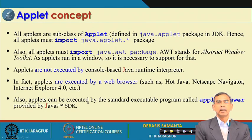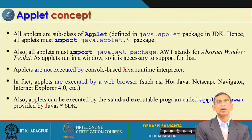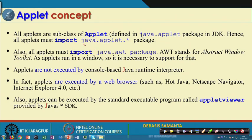For applet programming, let us see how Java supports us. In the Java API there is one package called the applet package — java.applet. Within this java.applet package there is a class called the Applet class. We can use this Applet class to create our applet program.